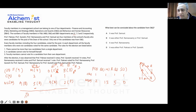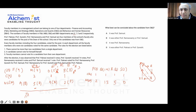For the question about what we can conclude about the candidates from Operations and another department: we know it could be either R or S. So option B — it was either R or S — is the right answer.